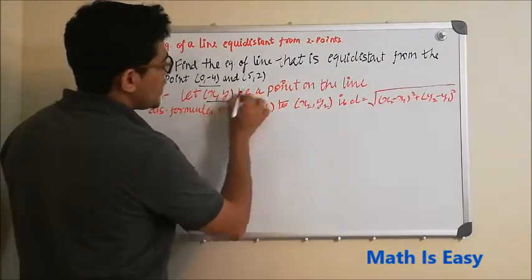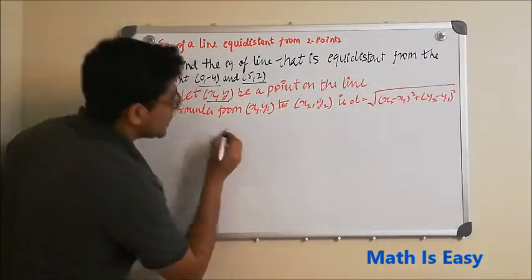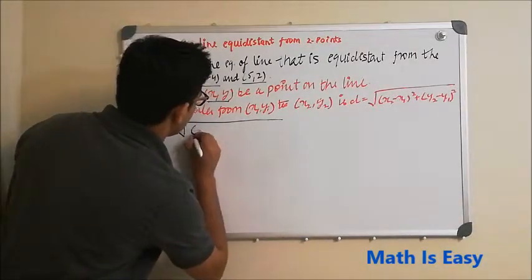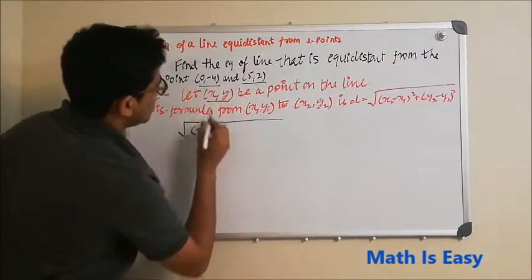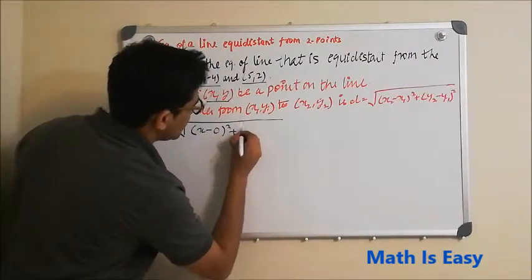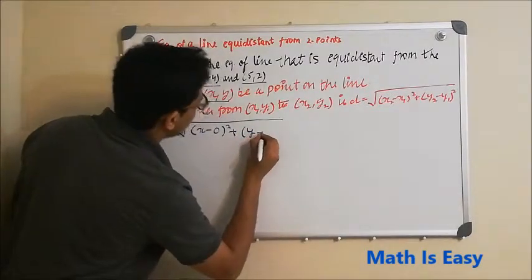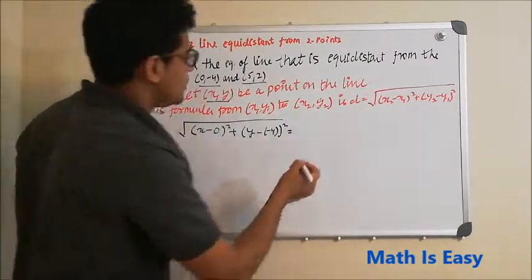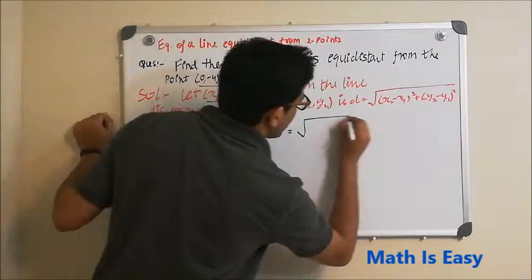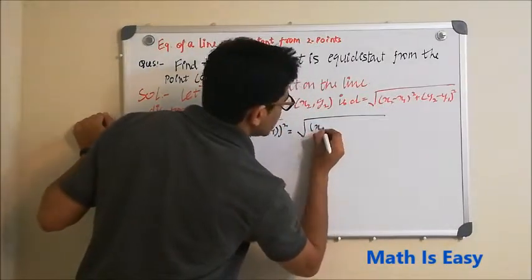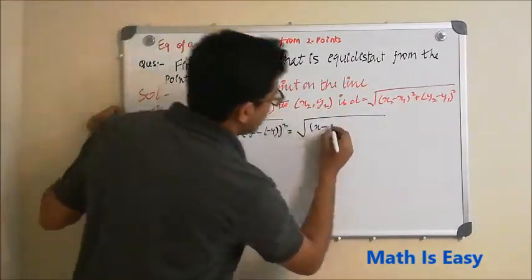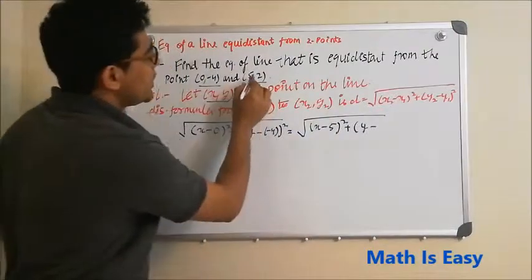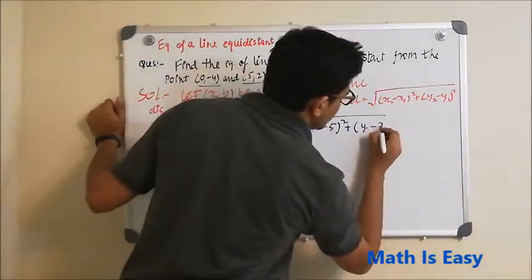The distance formula is: square root of (x - 0)² plus (y - (-4))² equals square root of (x - 5)² plus (y - 2)². This is the actual equation.